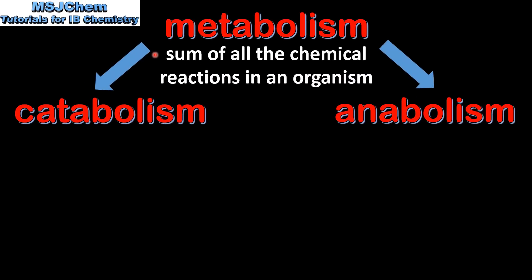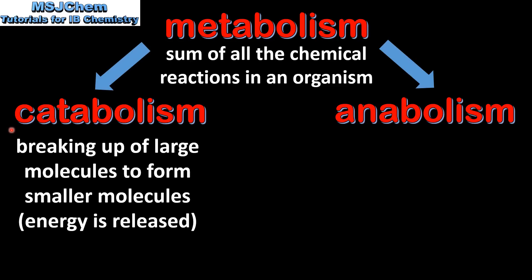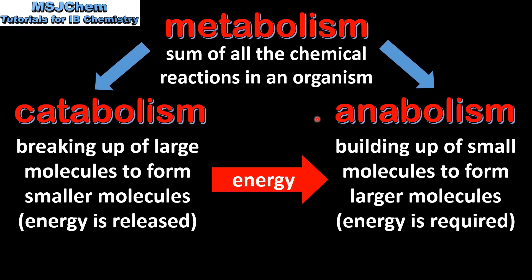Metabolism, which is the sum of all the chemical reactions in an organism, can be divided into catabolism and anabolism. Catabolism involves the breaking up of large molecules to form smaller molecules. In catabolic reactions, energy is released. Anabolism involves the building up of small molecules to form larger molecules. In anabolic reactions, energy is required. The energy released in catabolic reactions is used in anabolic reactions.